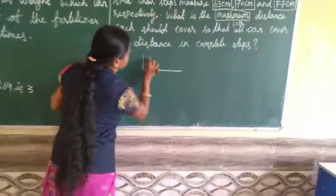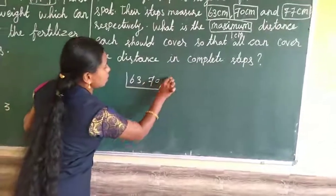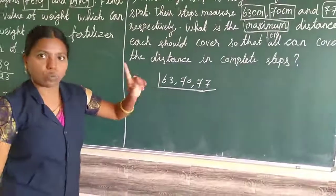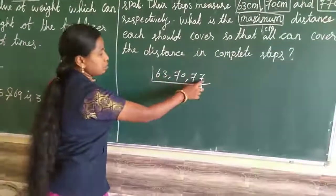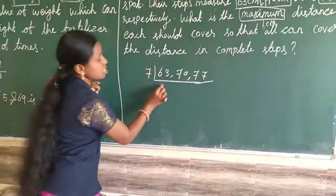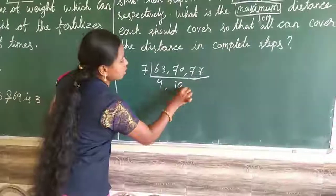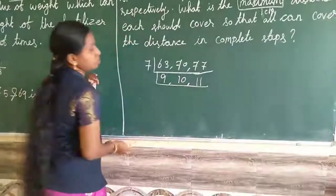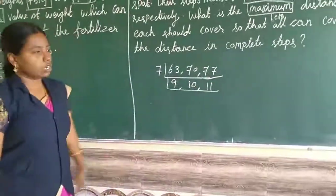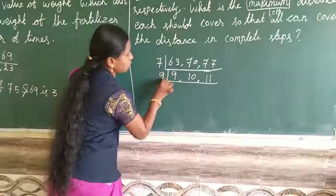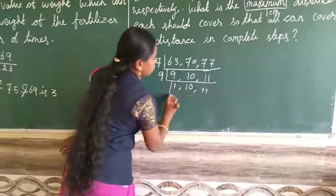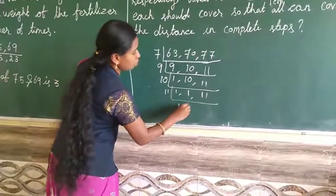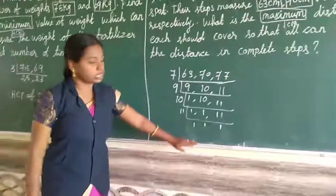I am going to find out the LCM for these three numbers. 63, 70, 77. LCM, so down we want to get 1, up to that we want to do. These three numbers will come in seven tables. Seven times are 63, seven times ten are 70, seven times eleven are 77. Again, this number will not come in any number, so I will be doing in nine. Then 1, 10, eleven. Again, 10 table, 1, 1, eleven. 11 table, 1, 1, 1.